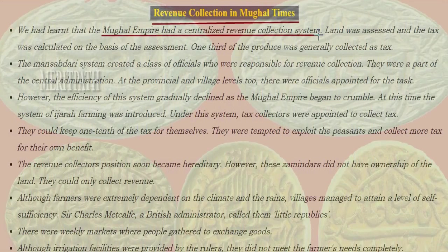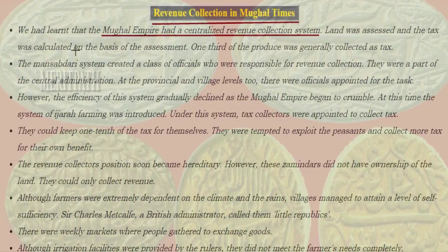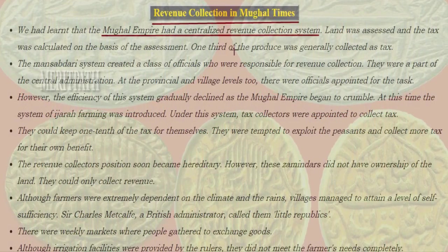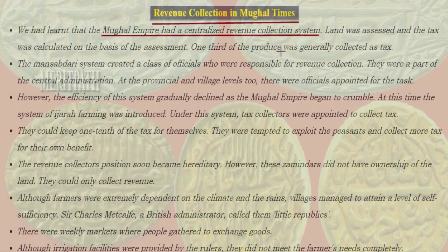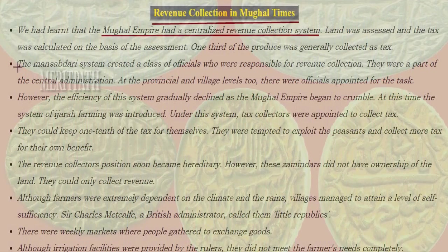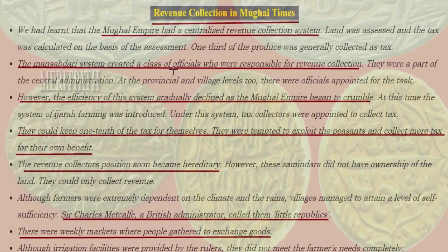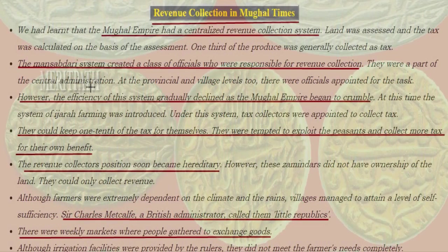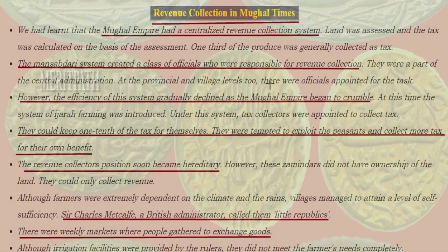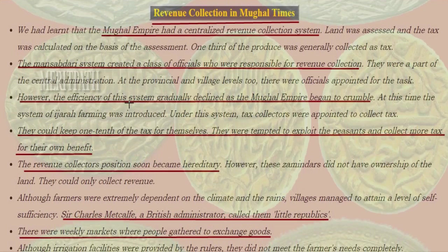The Mughal Empire had a centralized revenue collection system. Land was assessed, and tax was calculated on the basis of that assessment. One third of the produce was generally collected as tax. The Mansabdari system created a class of officials who were responsible for revenue collection, and they were a part of the central administration.